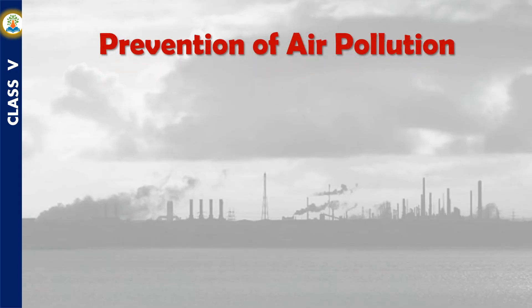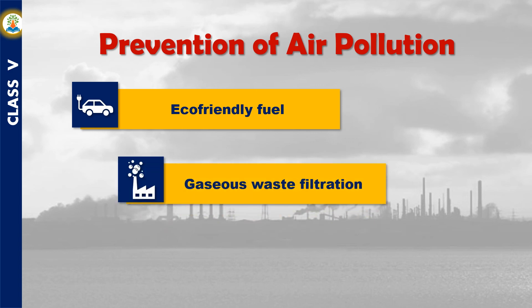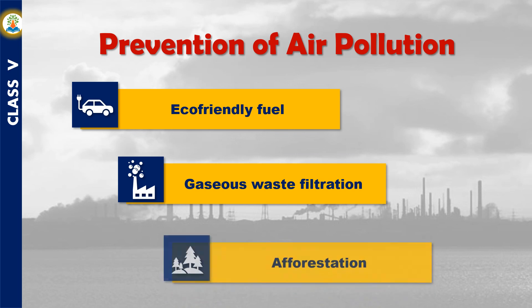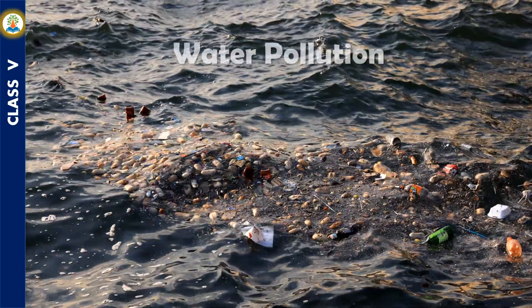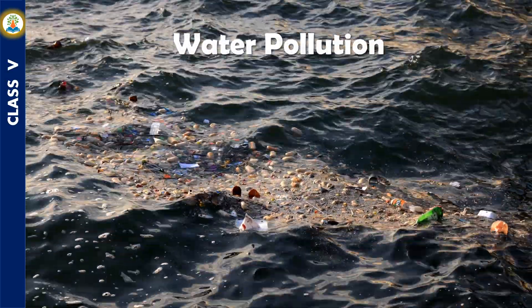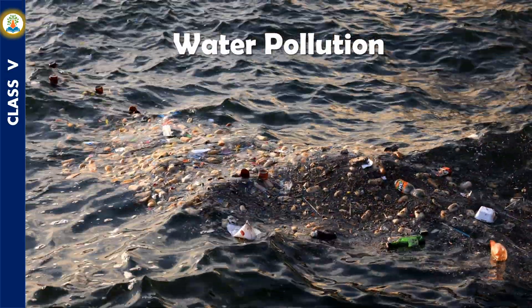Air pollution can be prevented in the following ways: fuels that produce less toxic gases should be used in vehicles, gaseous waste should be filtered by factories before releasing it into the air, and afforestation should be encouraged.